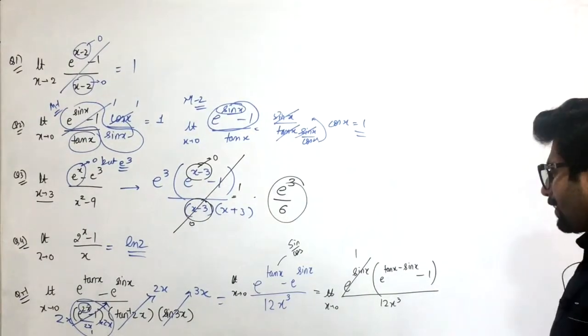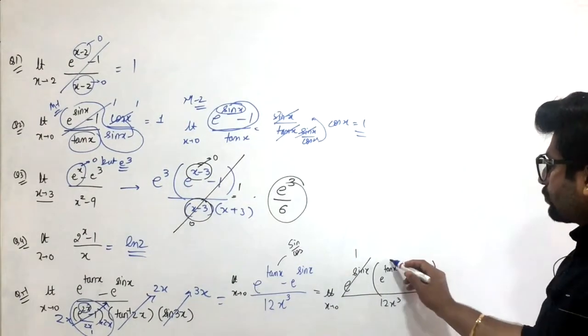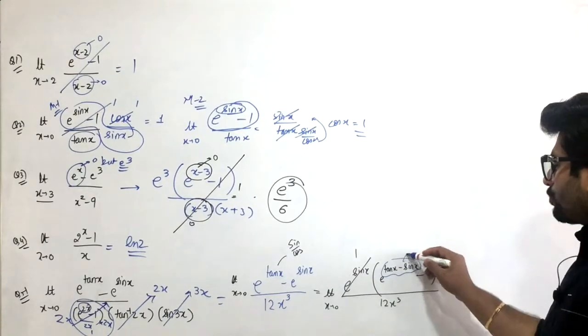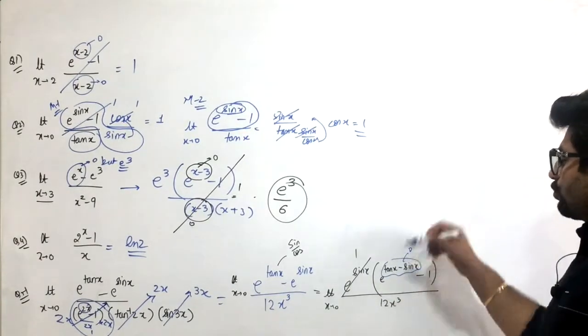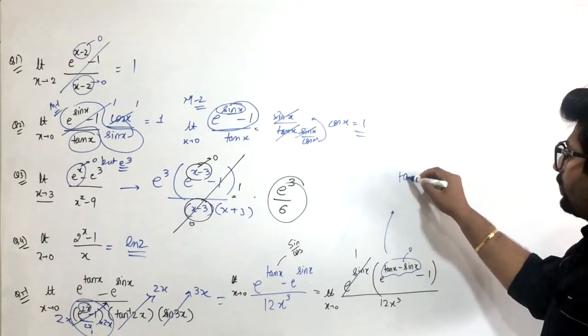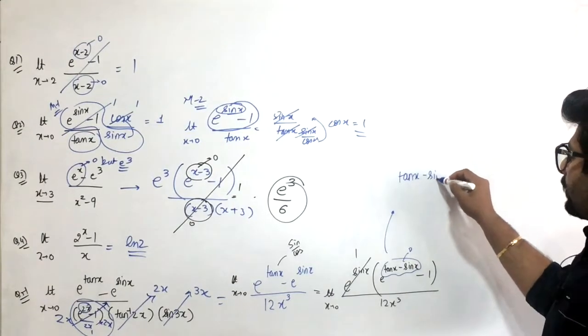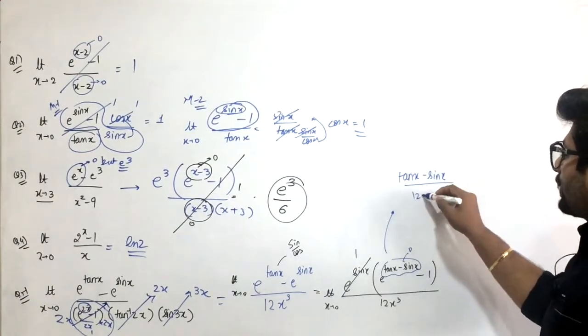Now the question reduces to e raised to power tan x minus e raised to power sine x upon 2x. But wait, we have two separate exponentials. Using the shortcut: e to the power of something, if 0 is put, then I can replace the whole expression. So this becomes tan x minus sine x upon 12 x cubed.